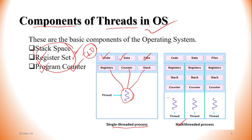Thread number one, thread number two, thread number three — we can see each thread has a program counter, stack, and register. Thread three also has a program counter, stack, and register.